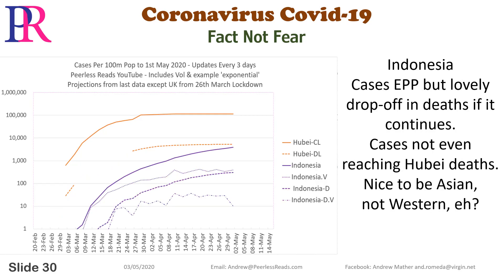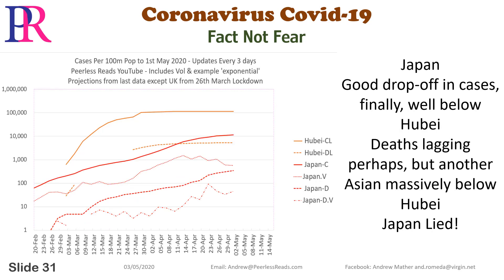Indonesia: cases EPP, but lovely drop-off in deaths if it continues. Cases not even reaching Hubei levels — nice to be Asian, not Western. Japan: good drop-off in cases, finally well below Hubei. Deaths lagging perhaps, but another Asian country massively below Hubei.